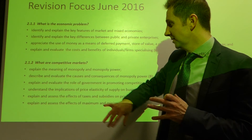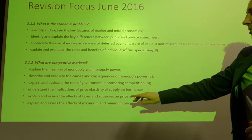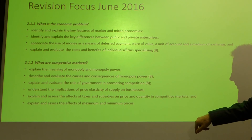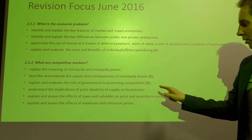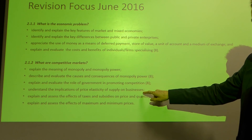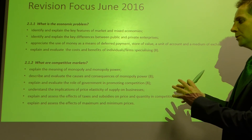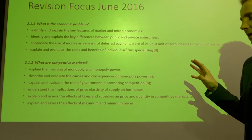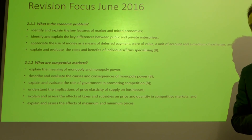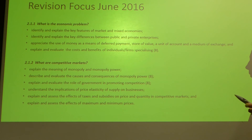What about section 2, competitive markets? Focus on monopoly: explain the meaning of monopoly and monopoly power; describe and evaluate the causes and consequences of monopoly power — potential eight-mark question; explain and evaluate the role of government in promoting competition — potentially eight marks. Understand the implications of price elasticity of supply on businesses. Assess the effects of taxes and subsidies on price and quantity in competitive markets — that with diagrams has not appeared at all of late. And explain and assess the effects of maximum and minimum prices — we saw a minimum price question previously, but not maximum price, so worthy of your consideration.